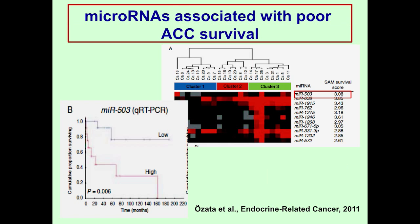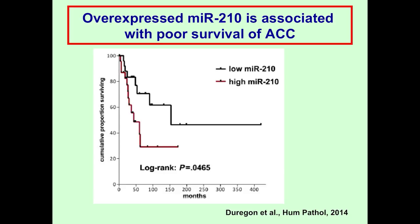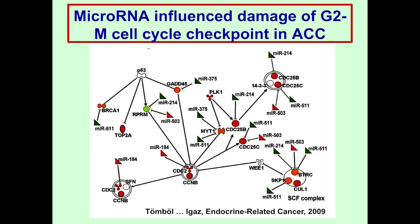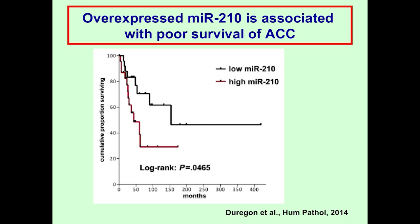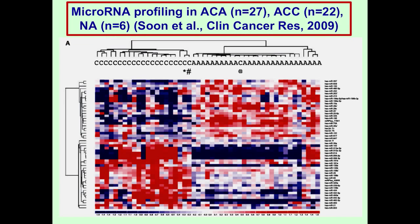MiR-503 was later found to be a prognostic marker, where overexpression of miR-503 was associated with poorer survival compared to tumors showing lower expression. Very similarly, in a recent study, overexpression of the hypoxia-miR miR-210 was also associated with shorter overall survival in ACC patients, as hypoxia is also a general feature of advanced adrenocortical cancer. By bioinformatic analysis, we showed that these microRNAs mostly affect the G2M cell cycle checkpoint, which is not very surprising in a malignant tumor.